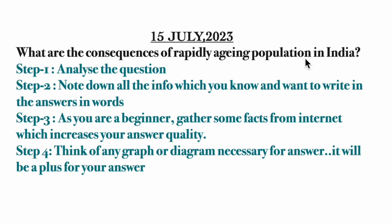Aging population means nothing but an increase in the older population — elder people's population is increasing. You should go through reports on aging population, read those reports carefully, and then go through the positive effects and the negative effects of the rapidly aging population. Also make a graph, as it may be included in reports on this topic.